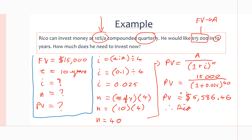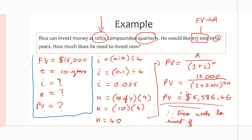Therefore, Rico needs to invest $5,586.46 now to get to his future value of $15,000 in 10 years at a rate of 10% annually, compounding quarterly.